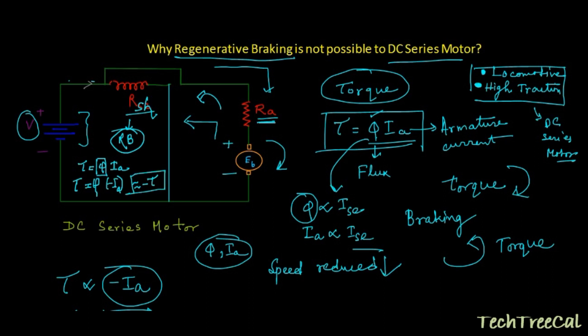With the flux constant and Ia reversed, the torque becomes negative, helping to reduce the speed of the motor and creating braking. This explains the constraints of using a DC series motor for regenerative braking and how changing it to a shunt or separately excited motor — using a power contactor or other means — allows regenerative braking in DC motors.